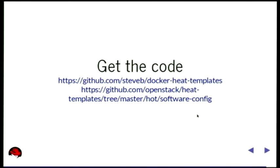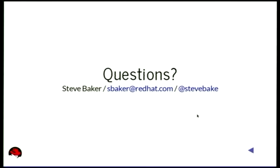Get the code if you want to build your own container-based Heat appliance — that's the first link. The Disk Image Builder element for building the software config hook that handles Kubelet is in the second link. Any questions?